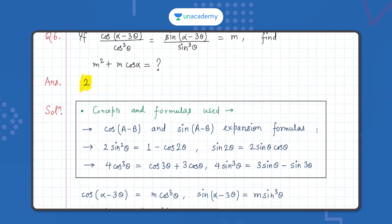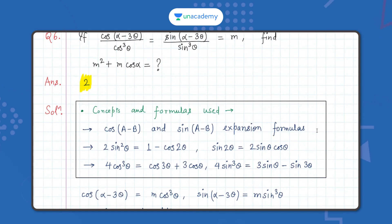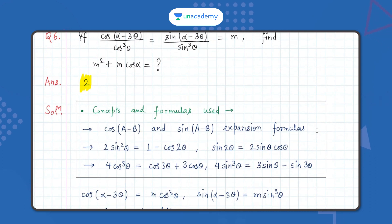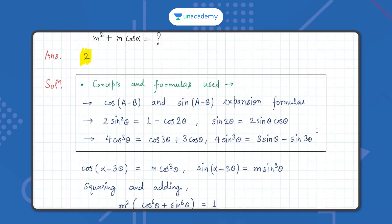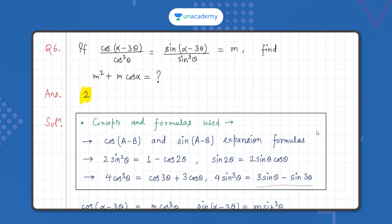The concepts and formulas used are the cos(A - B) and sin(A - B) expansion formulas. cos(A - B) = cosA·cosB + sinA·sinB, and sin(A - B) = sinA·cosB - sinB·cosA. We should also know that 2sin²θ = 1 - cos2θ, sin2θ = 2sinθ·cosθ, 4cos³θ can be expressed in terms of cosθ and cos3θ, and sin³θ can be expressed in terms of sinθ and sin3θ.